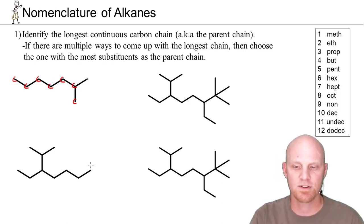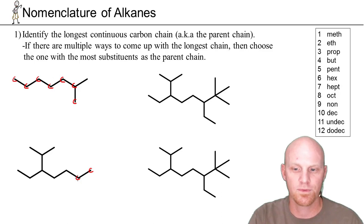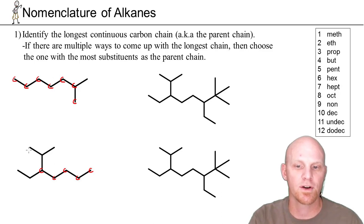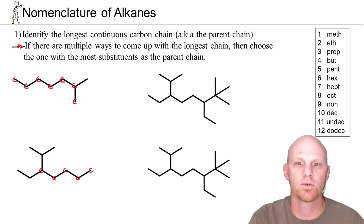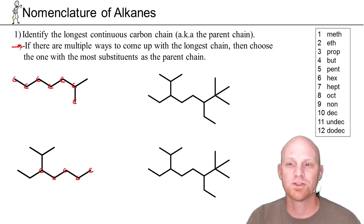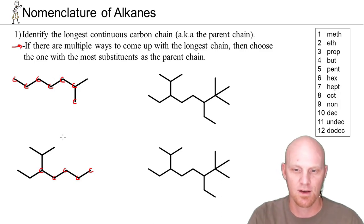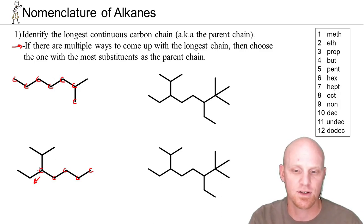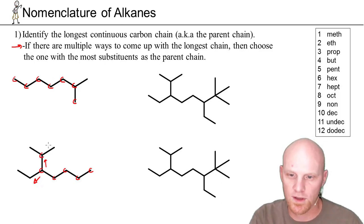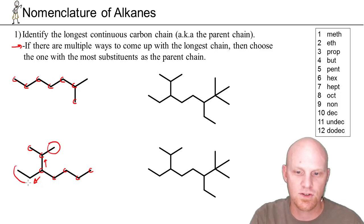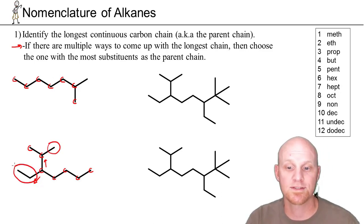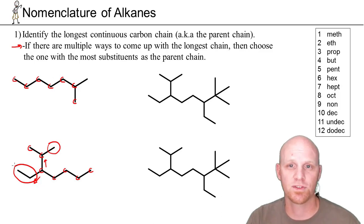In the second example, starting from the right we count one, two, three, four, five to a branch point where we can go two longer down or two longer up. Rule one's special clause says if there are multiple ways to get the longest chain, choose the one with the most substituents as the parent chain. Going up gives two substituents, while going straight left gives only one — so going up is the superior choice.